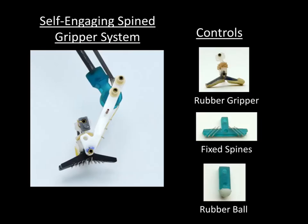To the left is the spined gripper, and to the right are the other control end effectors we tested.